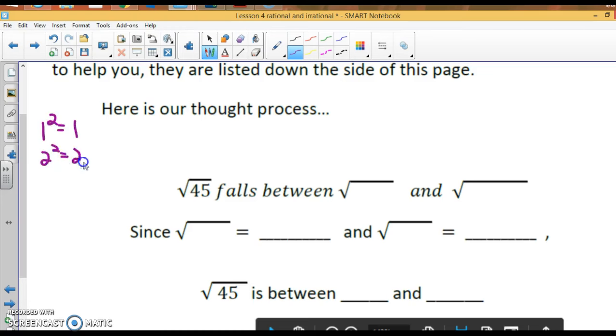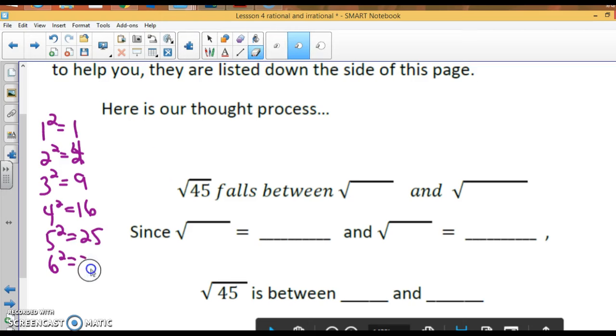1 squared is 1, 2 squared is 4, 3 squared is 9, 4 squared is 16, 5 squared is 25, 6 squared is—wait, 6 squared is 36, 7 squared is 49, 8 squared is 64.